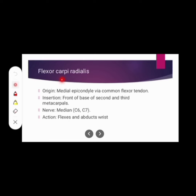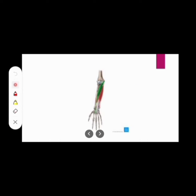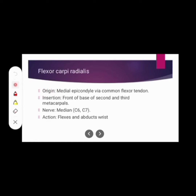The first muscle is flexor carpi radialis. Its origin is the medial epicondyle via common flexor tendon. Insertion: front of base of second and third metacarpal bone. Nerve supply: median nerve. Action: involved in wrist flexion and wrist abduction.